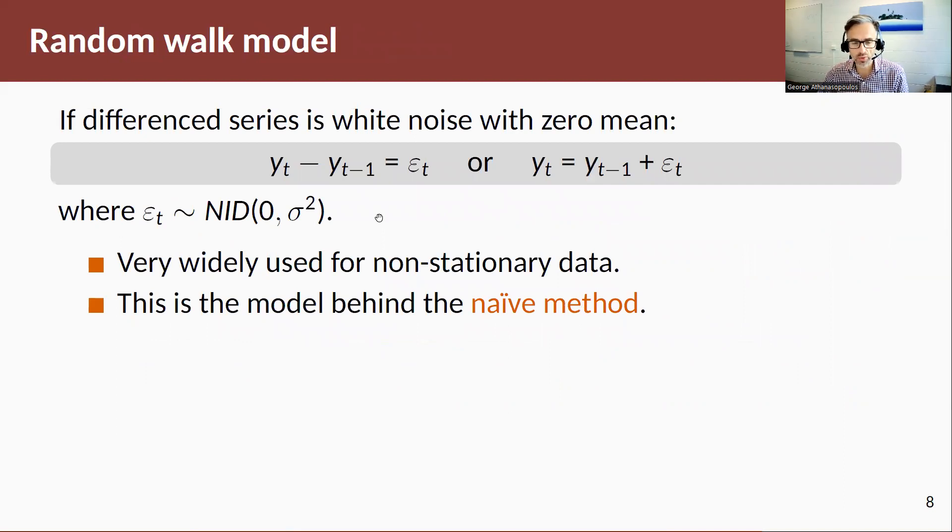How do we define the random walk model? Well, yt minus yt minus one we show that is white noise, hence is equal to epsilon t. Just rearranging this, we can show that yt is equal to yt minus one plus a random process epsilon t. For the random process we assume that this has mean zero, variance sigma squared, and it is normally and independently distributed.